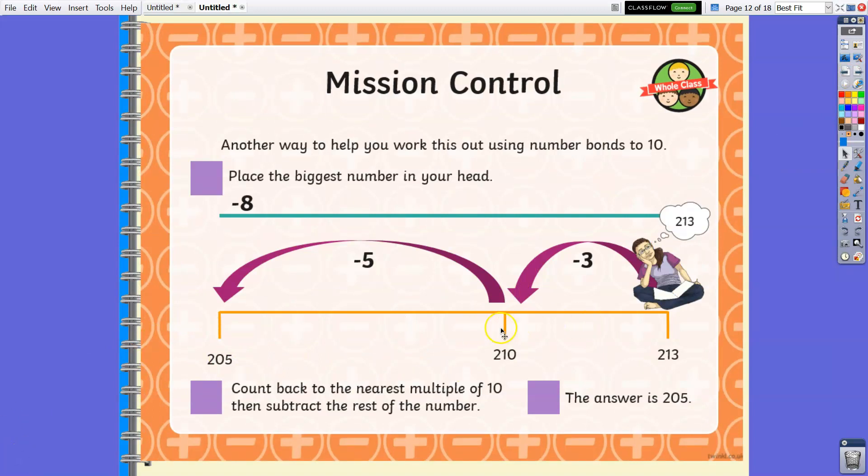Now here's another way, the fastest without using your fingers. We have 213. You have to think about counting backward to the nearest multiple of 10, so 213, the nearest is 210. From 210, it's already easier for you to minus the 8. So 210 minus 8 is 2. Wait, 10 minus 8 is 2. 2 plus 3 is 5. Therefore we have 205 as the answer.